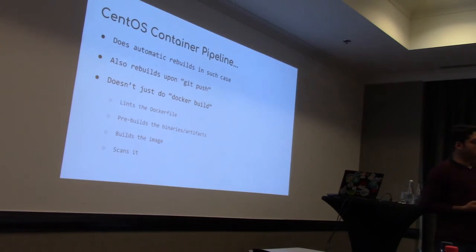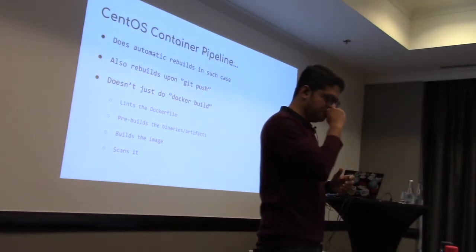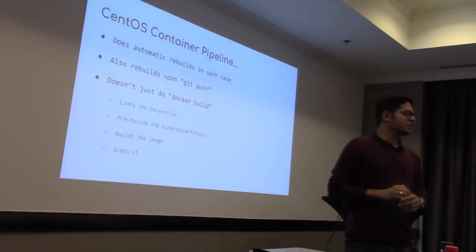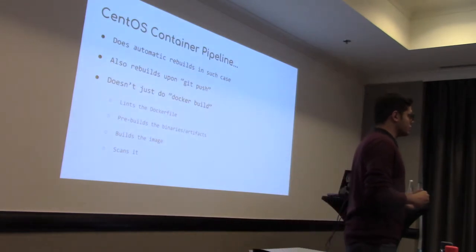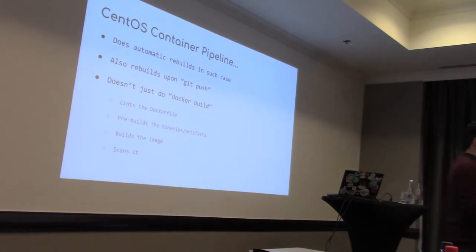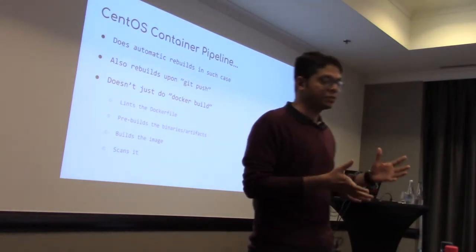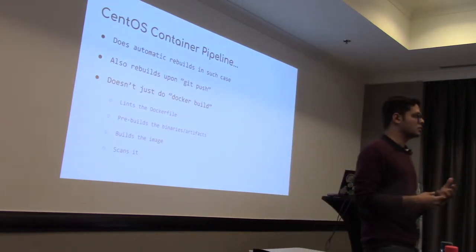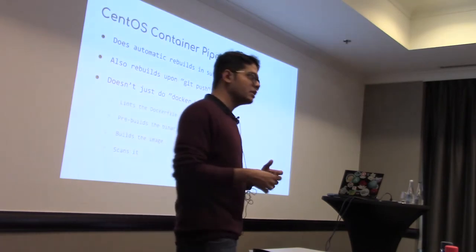We lint the Dockerfiles. Whatever Dockerfile you have from which the container image is supposed to be built, we lint it using a tool called Dockerfile_Lint. It's a JavaScript package available from Project Atomic — you can go to github.com/projectatomic/dockerfile_lint. The Project Atomic folks maintain the package and we just use the tool to lint the Dockerfile. It provides certain information that maybe certain kinds of labels are missing based on best practices.